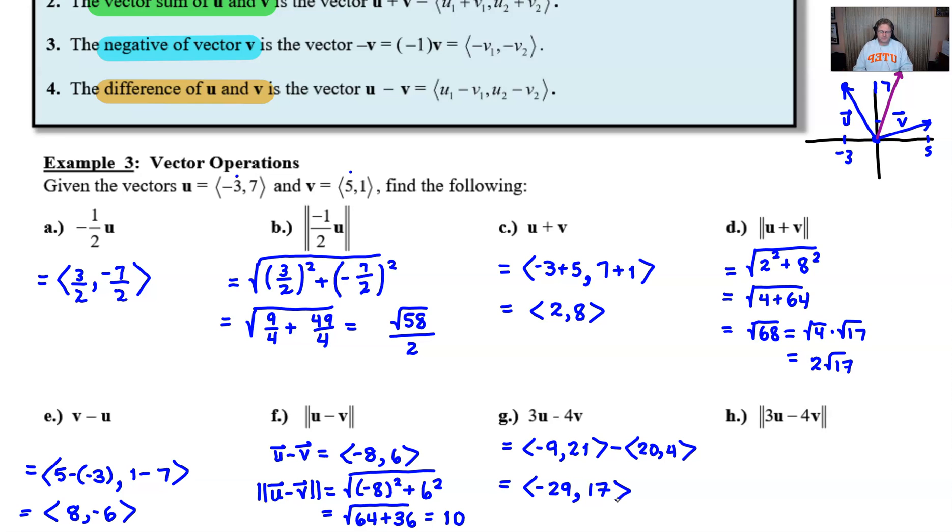And then finally for part h, we're just going to find the magnitude of that very vector that we just worked through here in example g. So we're going to really look at the square root of whoa, negative 29 squared. Anybody got a calculator handy? Plus 17 squared. Well, I'm not going to worry about you reaching for your calculator. I would say that this would probably be a calculator assisted question, but I've already done that work for you.